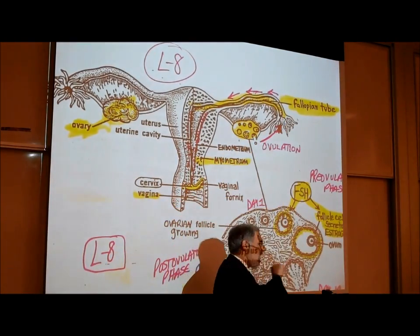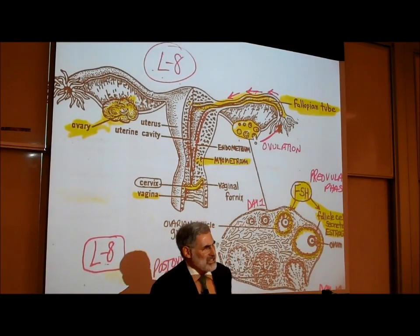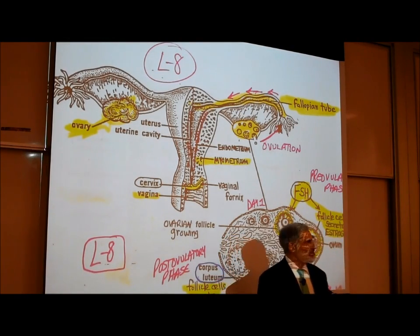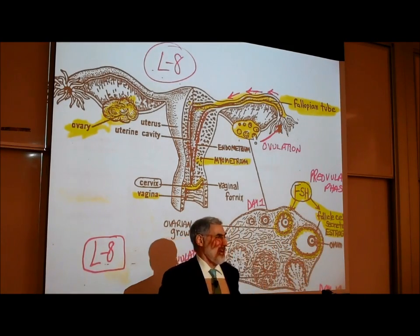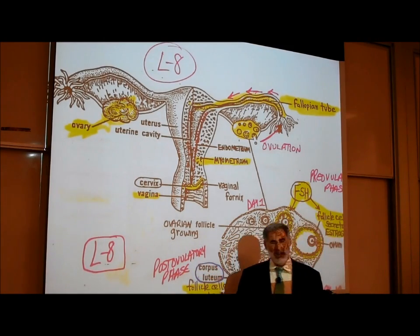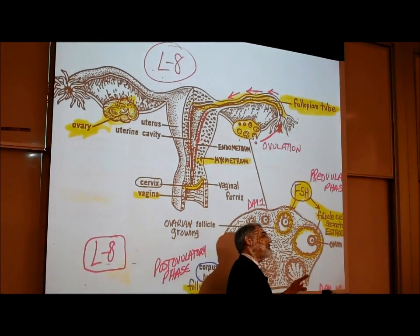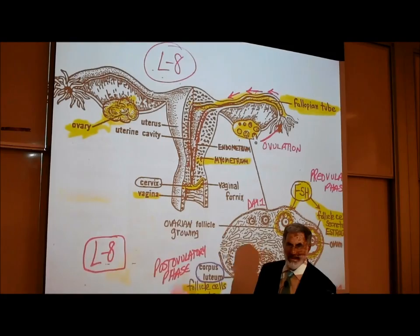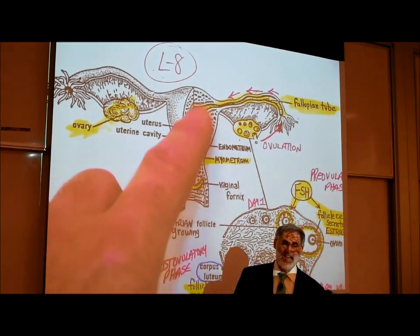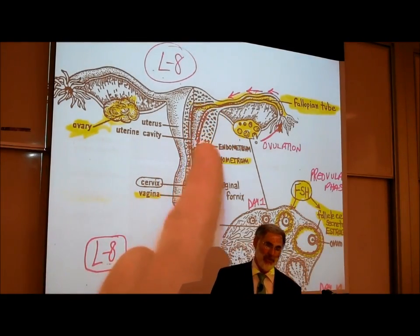The egg that's ovulated only lives about five days, and then it dies. We have cells that die all the time in our body. During those five days the egg is being pushed through the fallopian tube — it is during those five days that a woman can get pregnant. By the time the egg reaches the uterus, about one week after ovulation, it's already dying.